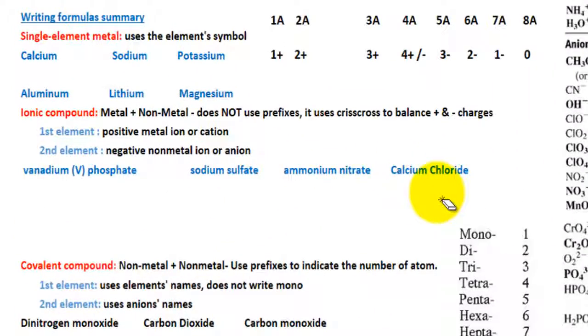In this lesson we are going to learn how to write chemical formulas from given names. The first type of name that you are going to see is a single element metal, and when you see a single element metal you're going to use the element symbols on the periodic table.